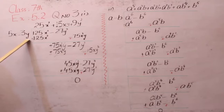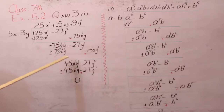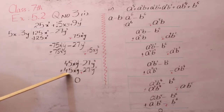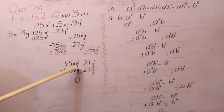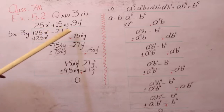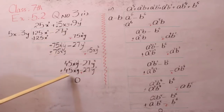बेटा, इसको इसके साथ भी तो multiply करना है। तो minus 3 को जब 15 से multiply करेंगे तो minus 45 बनेगा। साथ में क्या आएगा? x और y की 2। तो इस 45 को आप नीचे यहां पर लिख लेंगे — value बन जाएगी 45xy की 2। इसी तरह minus 27 को हम नीचे लाकर write कर देंगे। जब इसको multiply किया तो answer आया 27y की 3। तो total answer बनेगा: 45xy minus 27y की 3।